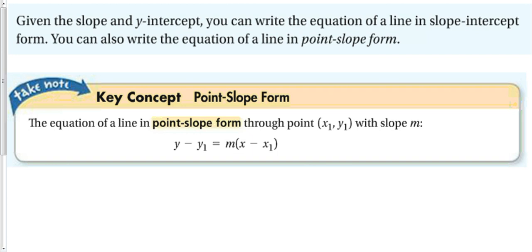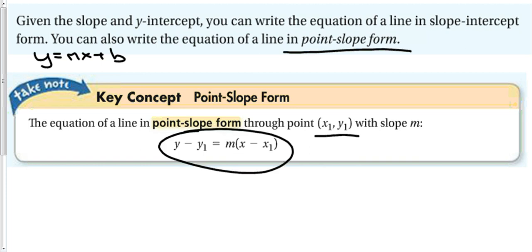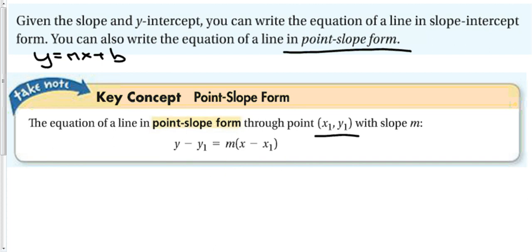Given a slope and a y-intercept we can write the equation of a line in slope-intercept form: y = mx + b. We can also write the equation of a line in something called point-slope form. To write an equation in point-slope form through point (x₁, y₁) with slope m, we use: y − y₁ = m(x − x₁). The important thing to notice is that this equation has negative signs in it, which means the signs of the points might change when we plug them in.